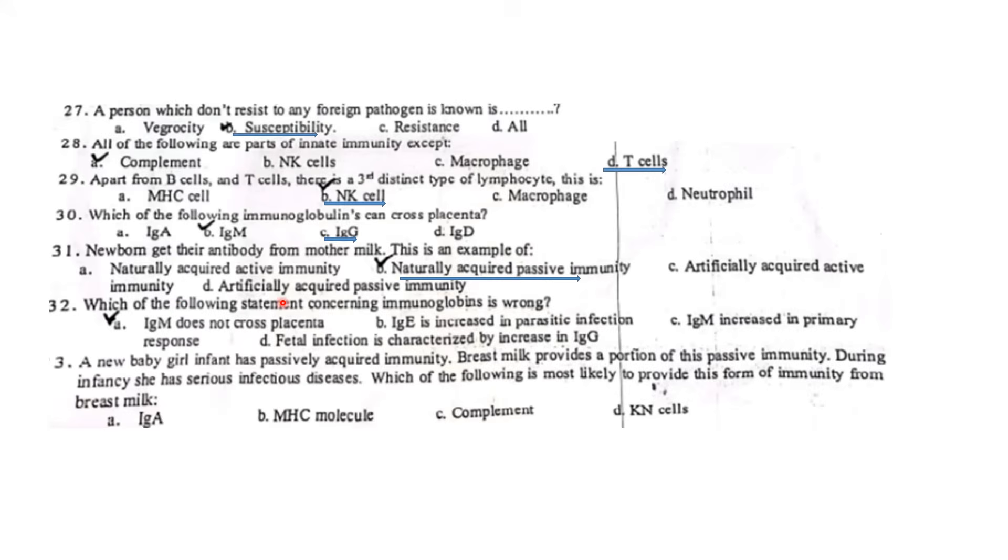Which of the following statement concerning immunoglobulin is wrong? Fetal infection is characterized by an increase in IgG. This is not the correct characterization. A newborn infant has specially acquired immunity. Breast milk provides a portion of passive immunity during infancy. Which of the following is most likely to provide this form of immunity from breast milk? IgA, which we call secretory antibodies.